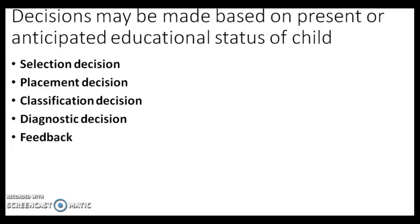The last decision type is feedback. A good teacher uses tests or any other tool of assessment to provide feedback to students. Feedback may be effective or ineffective depending upon the teacher's role, level, and qualification. Quality of feedback depends on the teacher, and good feedback will facilitate learning. Feedback is used for both student and teacher because it provides information to both and helps in knowing how students have learned and where teachers need to adjust.